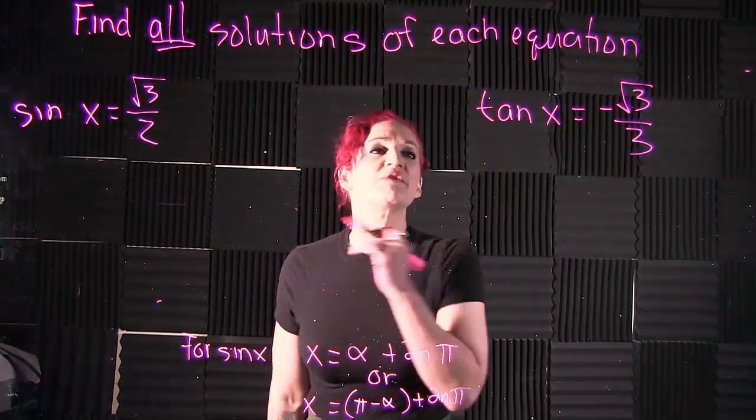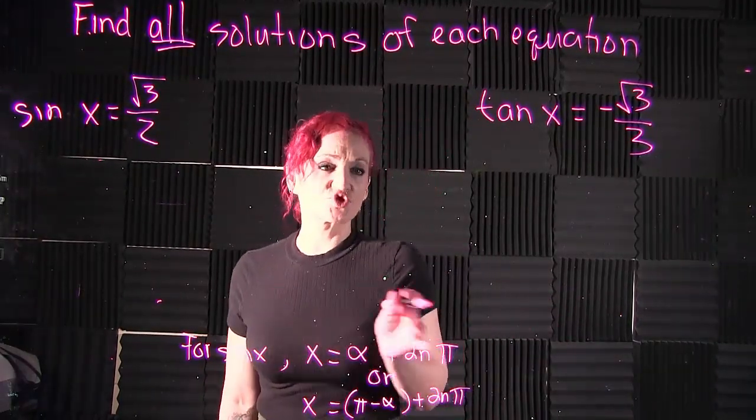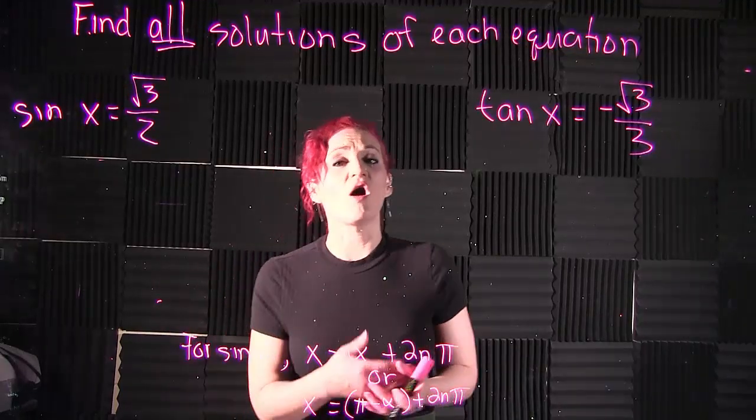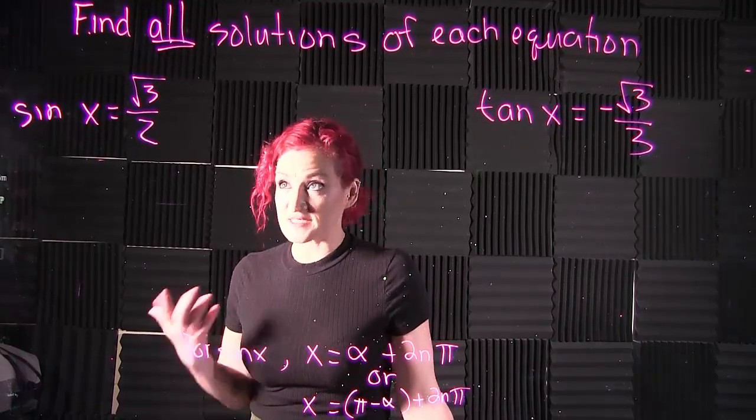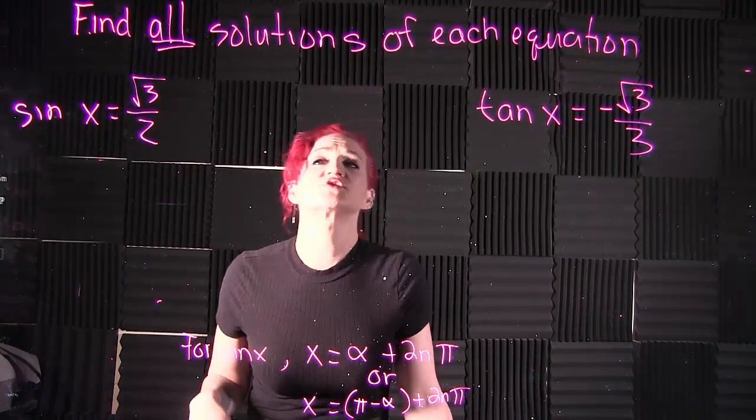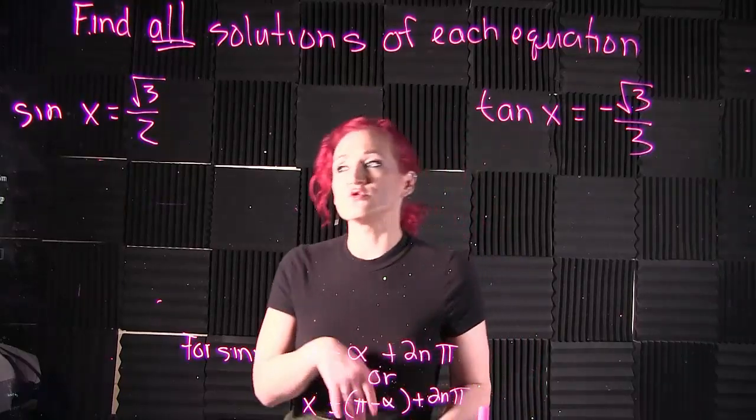Let's solve these basic trig equations and find all given solutions. In our first example, we have sine of x equals square root of 3 over 2. We want to find all solutions of x.